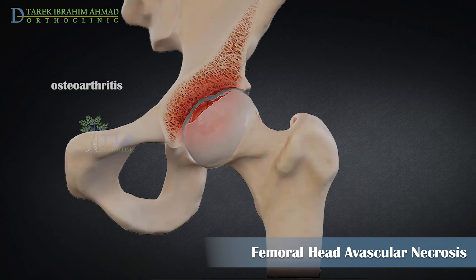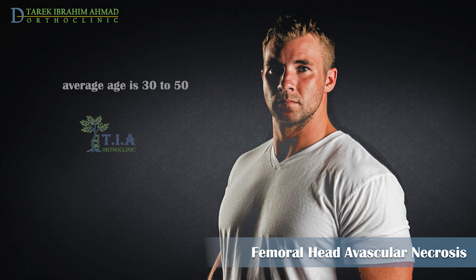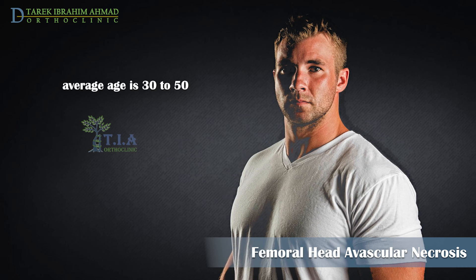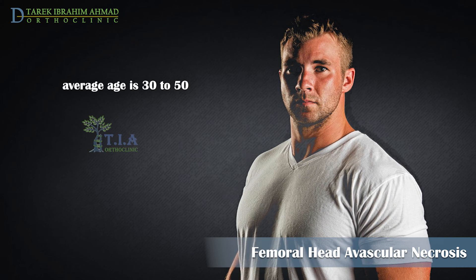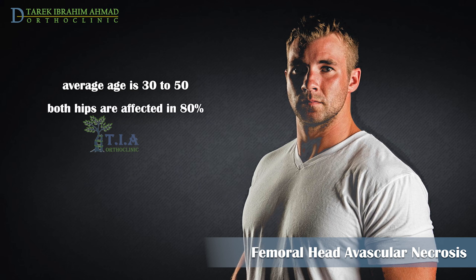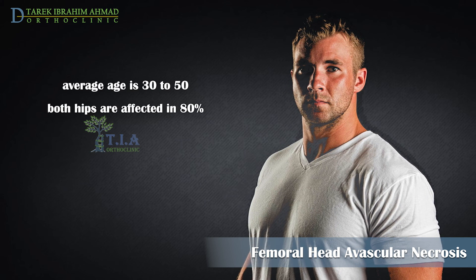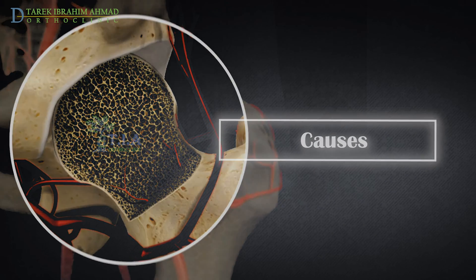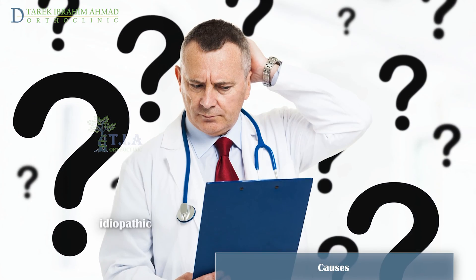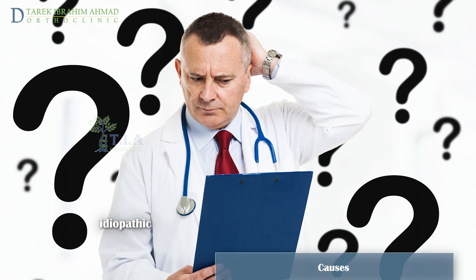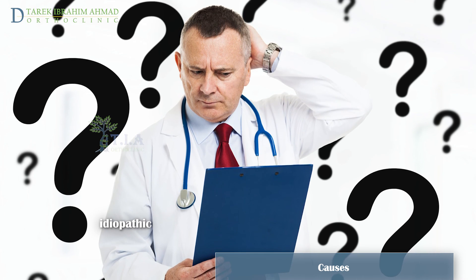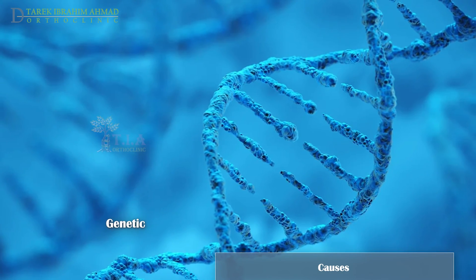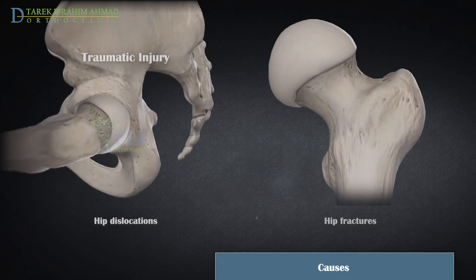Within a few months to two years, anyone can be affected, but the condition is most common in people between the ages of 30 and 50. In 80% of cases, both hips are affected by the disease. In most cases, the cause of this loss of blood supply is unknown, or termed idiopathic. Genetics likely play a role.